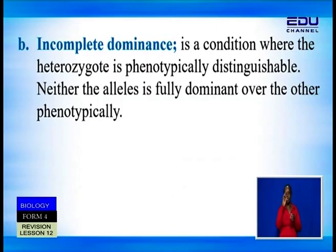That is one area you are likely to get a question testing you. The next scenario is incomplete dominance. This is a condition where the heterozygote is phenotypically distinguishable — neither of the alleles is fully dominant over the other.